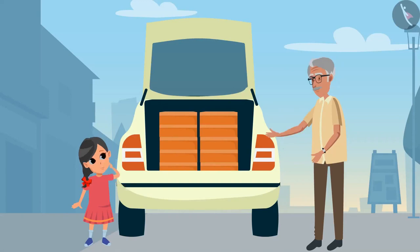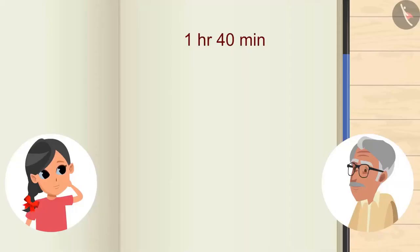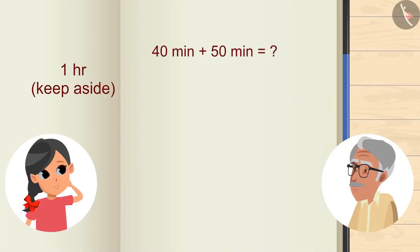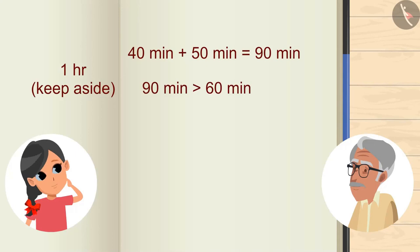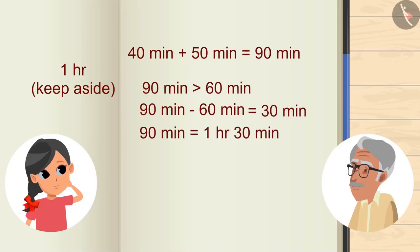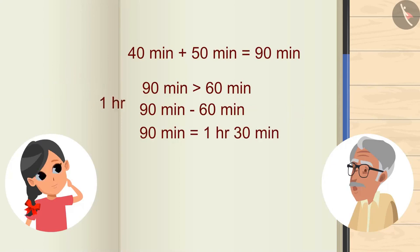If we have to add 50 minutes to 1 hour 40 minutes, look — units of 40 and 50 are both in minutes, so we can add them together. 50 plus 40 is 90 minutes. But is 90 minutes greater than 60 minutes? Yes. On subtracting 60 from 90 minutes, we get 30. So it is 1 hour 30 minutes. Now add this 1 hour 30 minutes to the previous 1 hour — so now we get 2 hours 30 minutes.